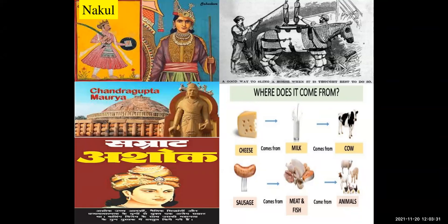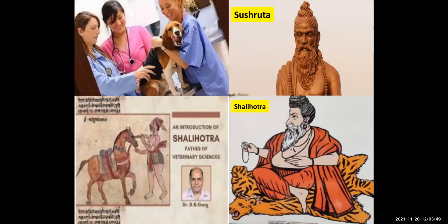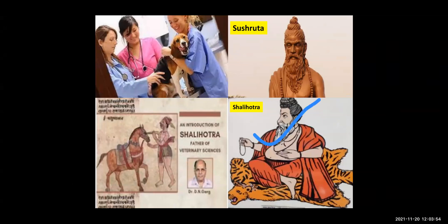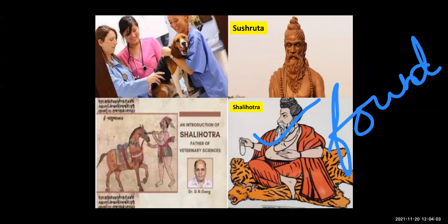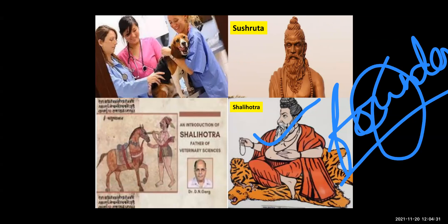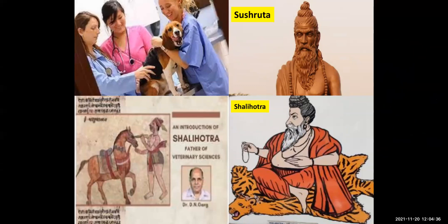It is believed that how treatment is done on a horse - how we are supposed to do this - was written by Nakula, who was one of the Pandavas. Our old existing veterinary text, Ashwa Ayurveda Siddhanta, also exists. Very importantly, Shalihotra was the founder of veterinary science. If anyone asks you who is the founder of veterinary medicine, your answer should be Shalihotra - just as we say Charles Babbage invented the computer.